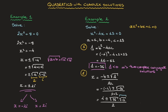Using the fact that the square root of negative 1 is i, we get 4 plus or minus 6i, all over 2. We then split the real and imaginary parts: 4 over 2, plus or minus 6i over 2. Finally, we state that x equals 2 plus or minus 3i.